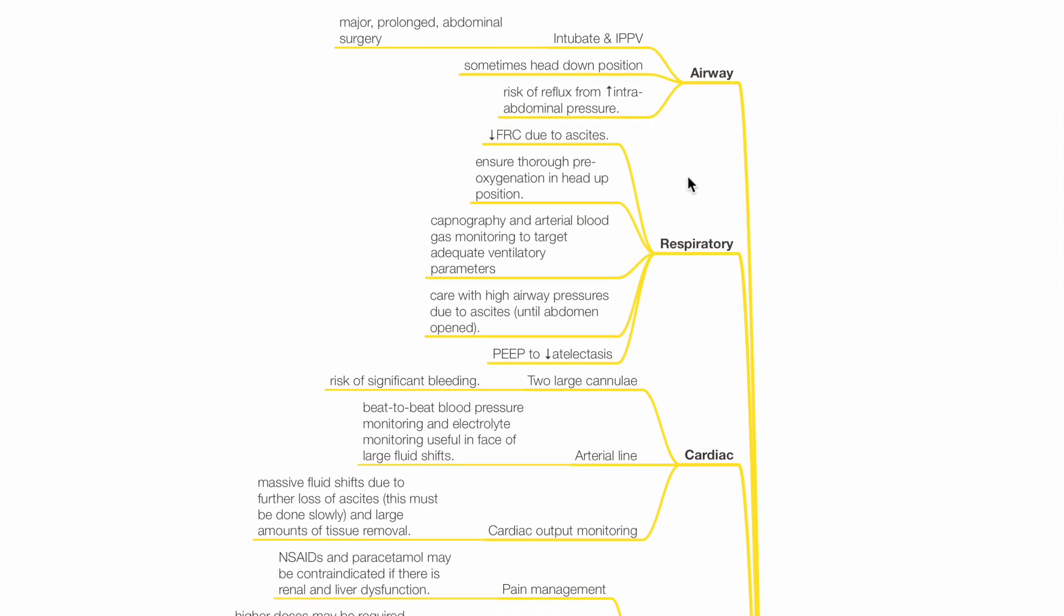Respiratory. Reduced FRC due to ascites reduces oxygen stores and safe apnea time during intubation and increases shunt leading to hypoxia. Ensure adequate pre-oxygenation in head-up position.